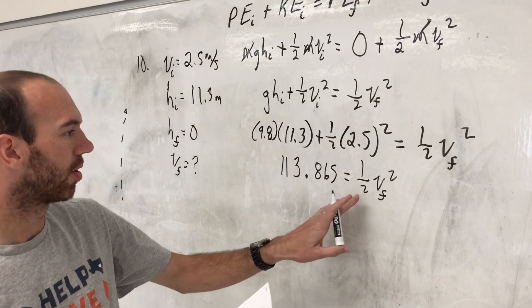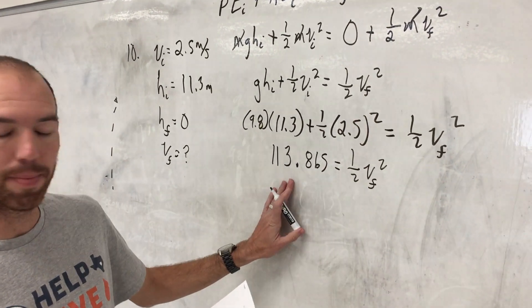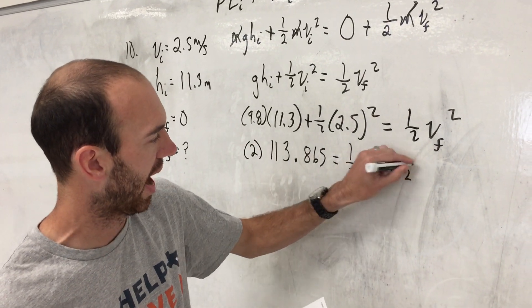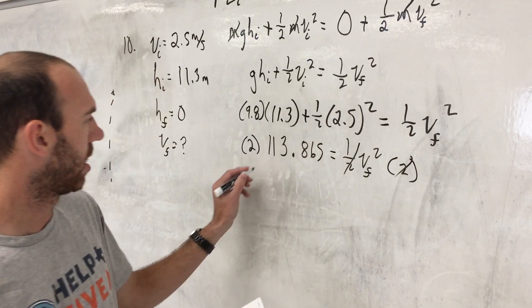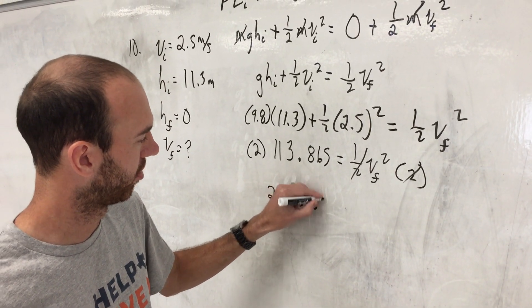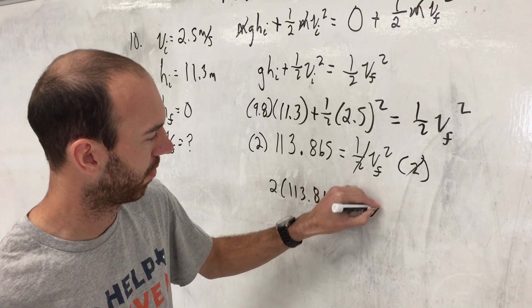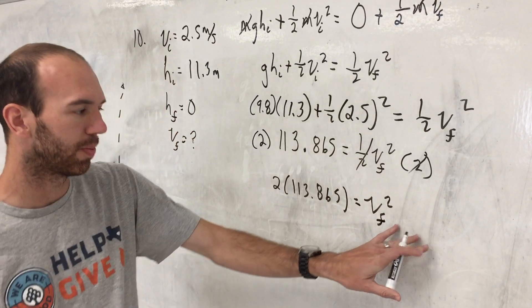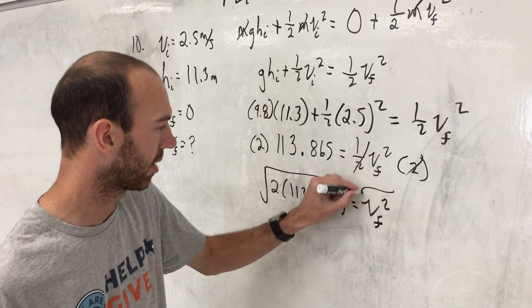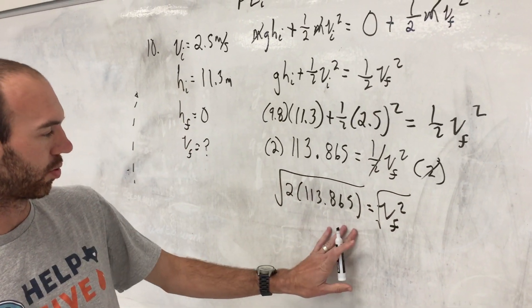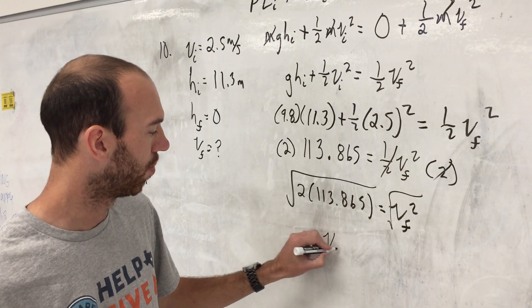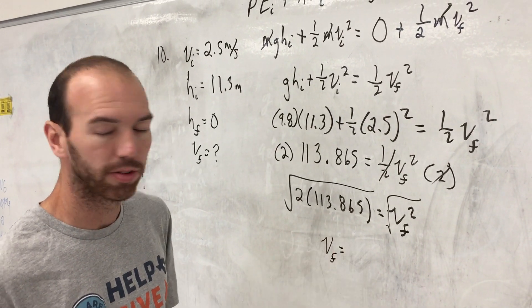So at this point we want to multiply both sides by two to get rid of this one half. So we have two times 113.865 equaling v final squared. And last bit, we have v final squared, so we need to take a square root. So we take a square root of both sides, square root of two times one hundred and thirteen point eight six five will be Piglet's final speed.